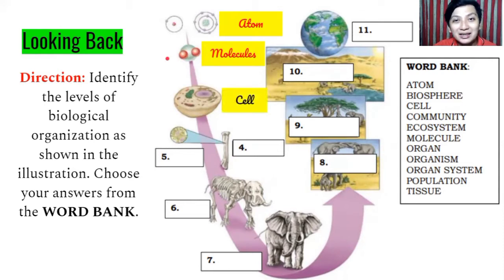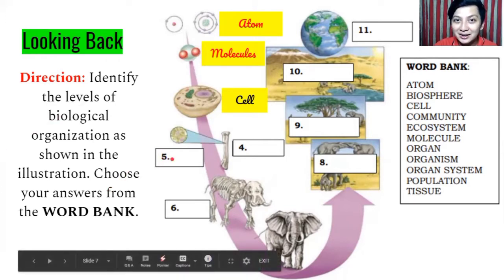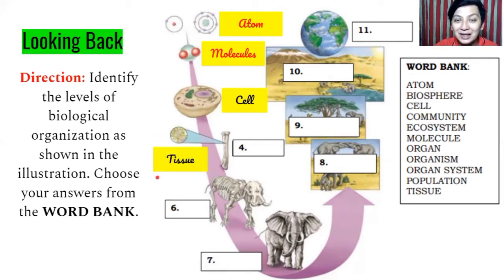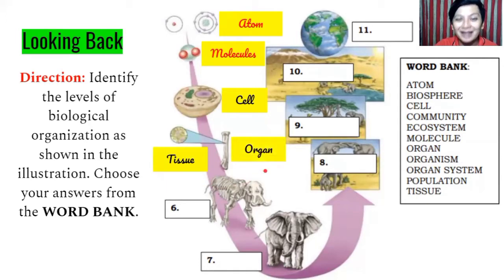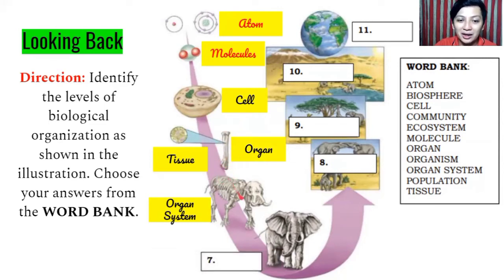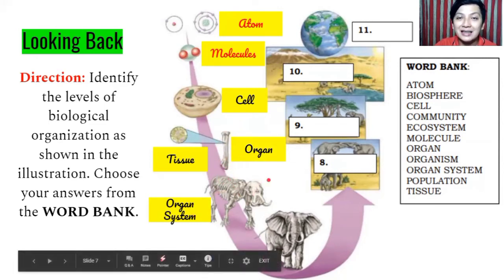Cell is the basic structural and functional unit of life. Group of cells is tissue. When tissues group together and perform a specific function, it is now an organ. When they are grouped together, it is now an organ system. In this case, our organ is the skeleton — a bone — and the organ system is the skeletal system.